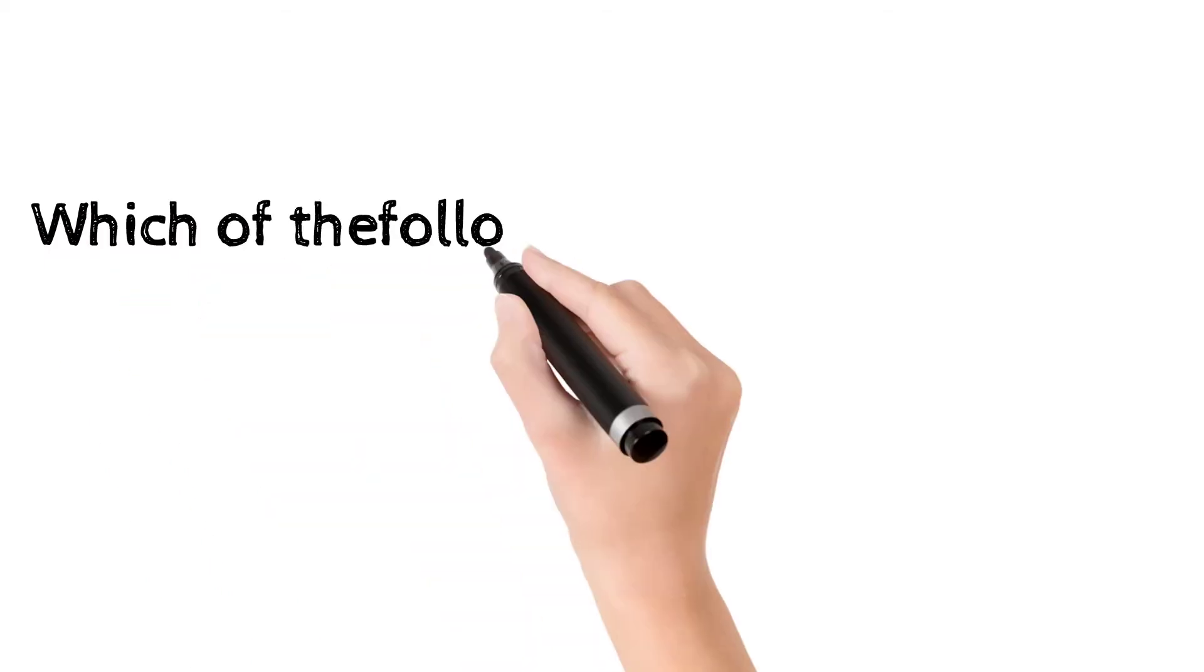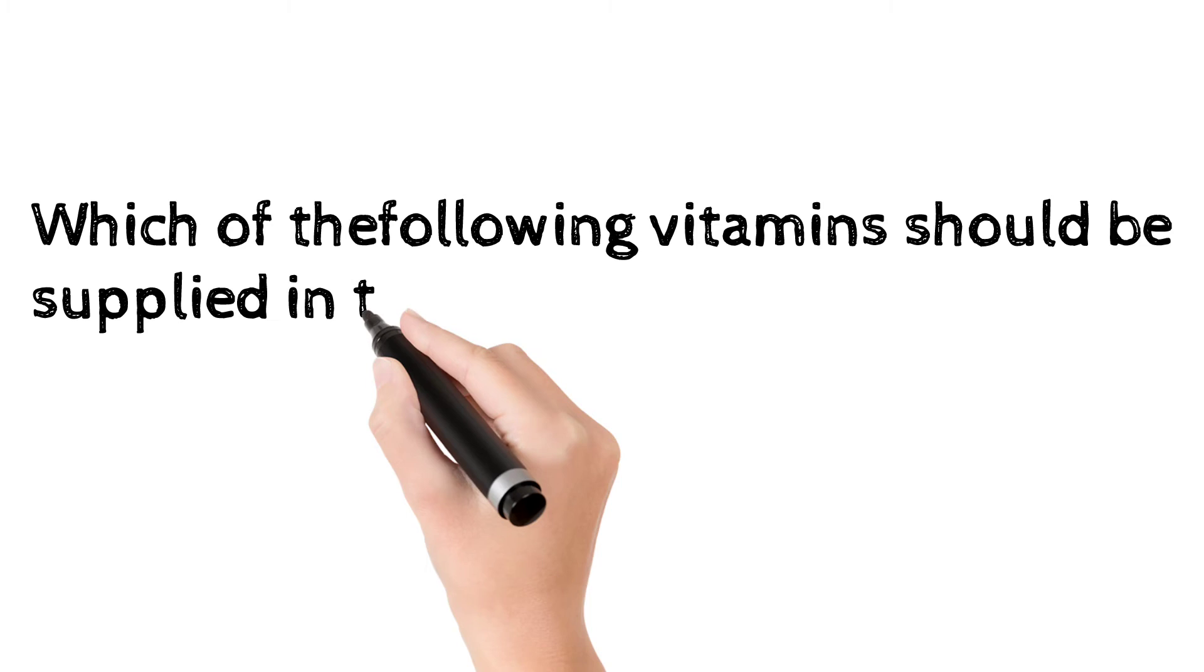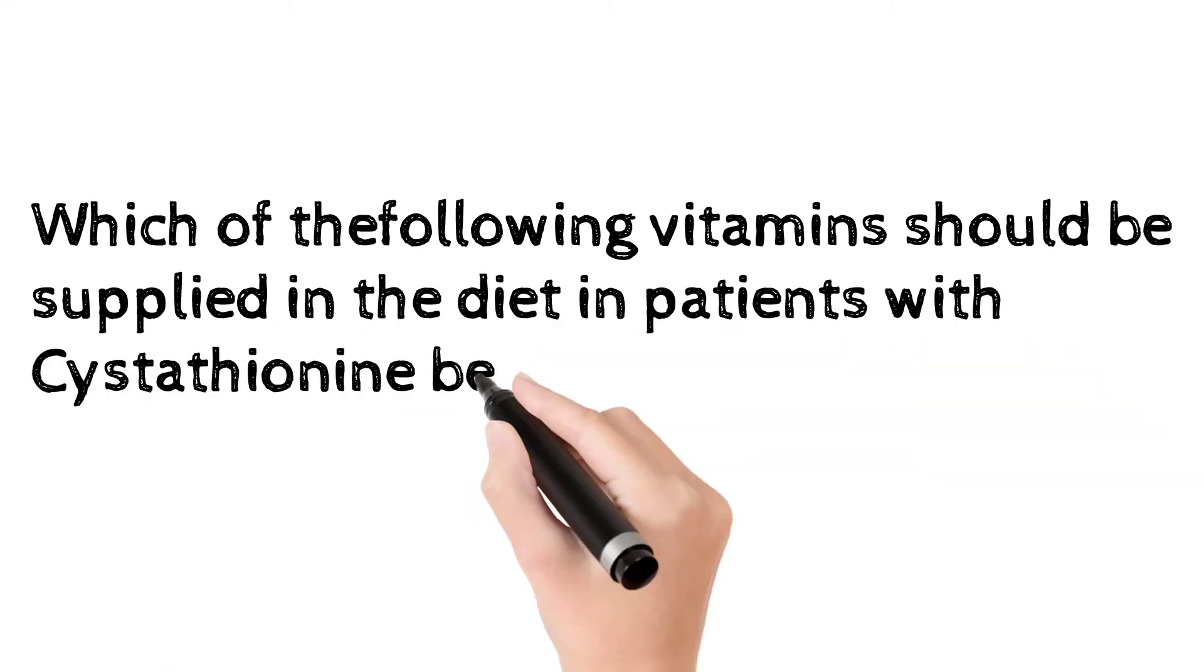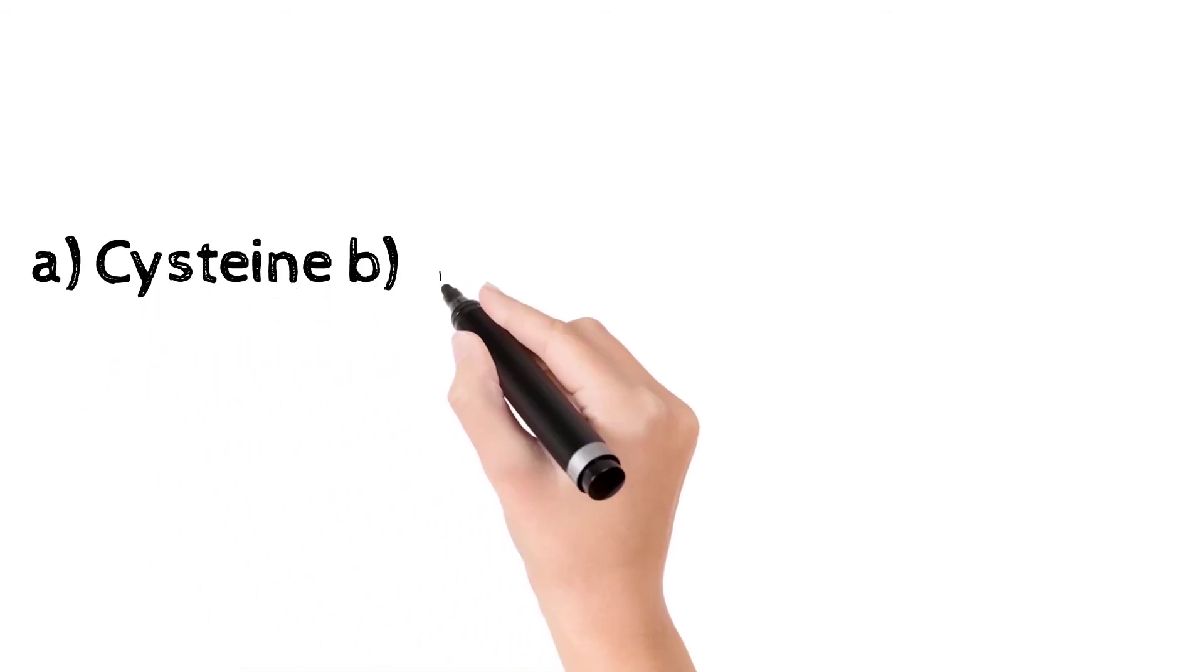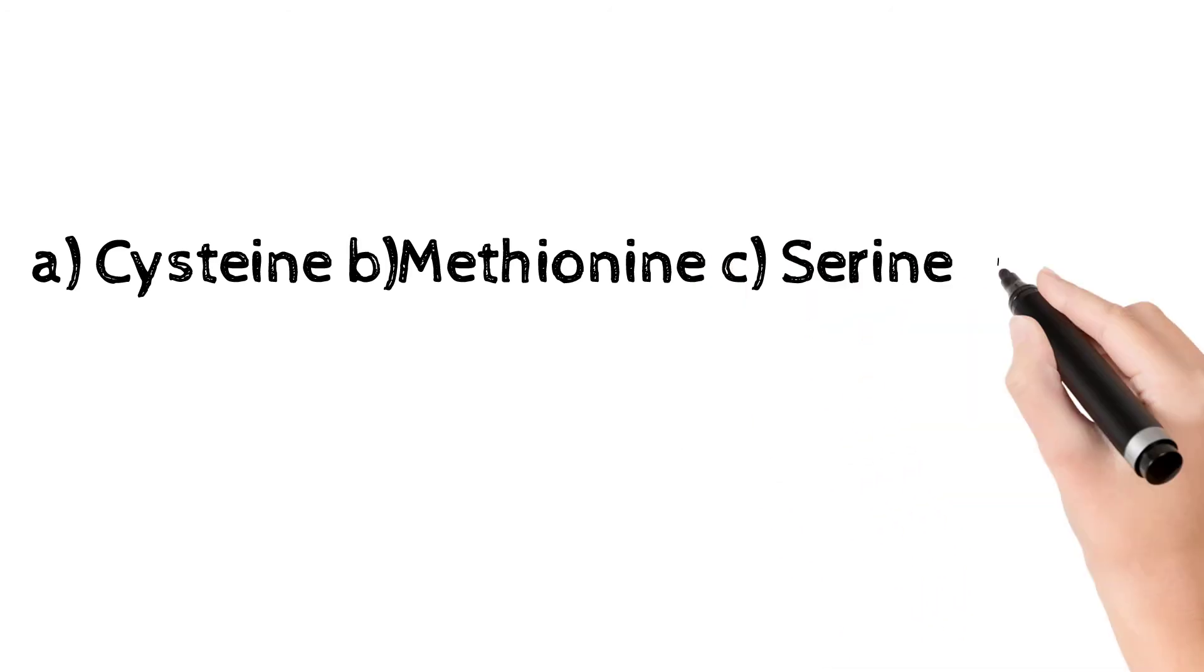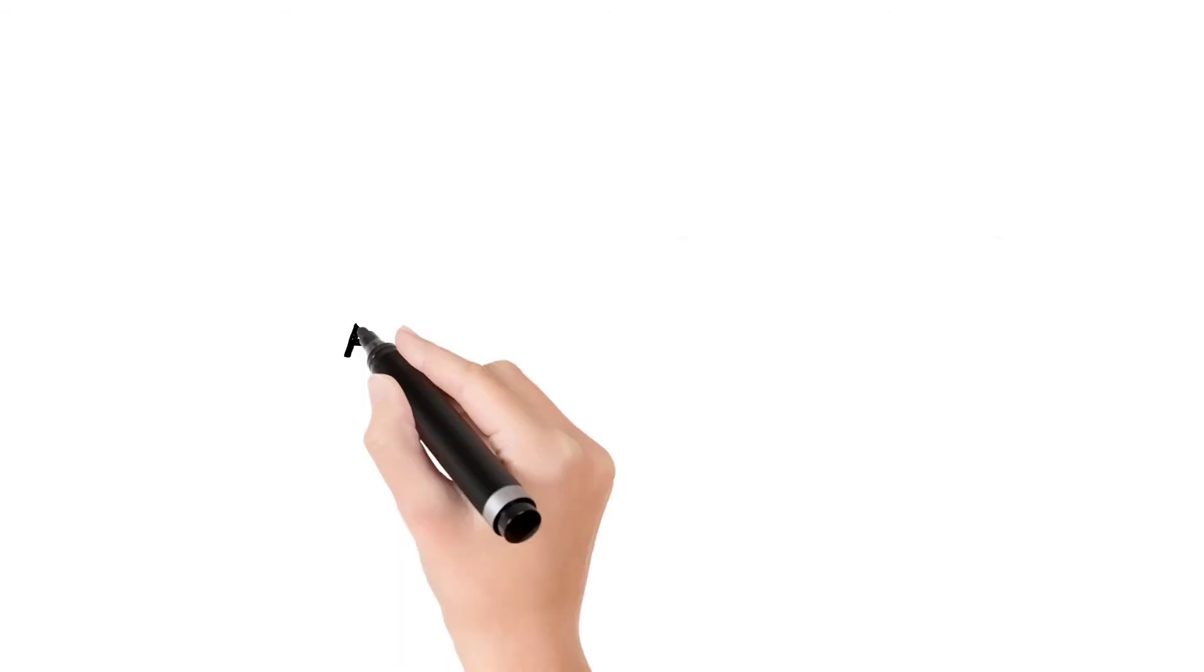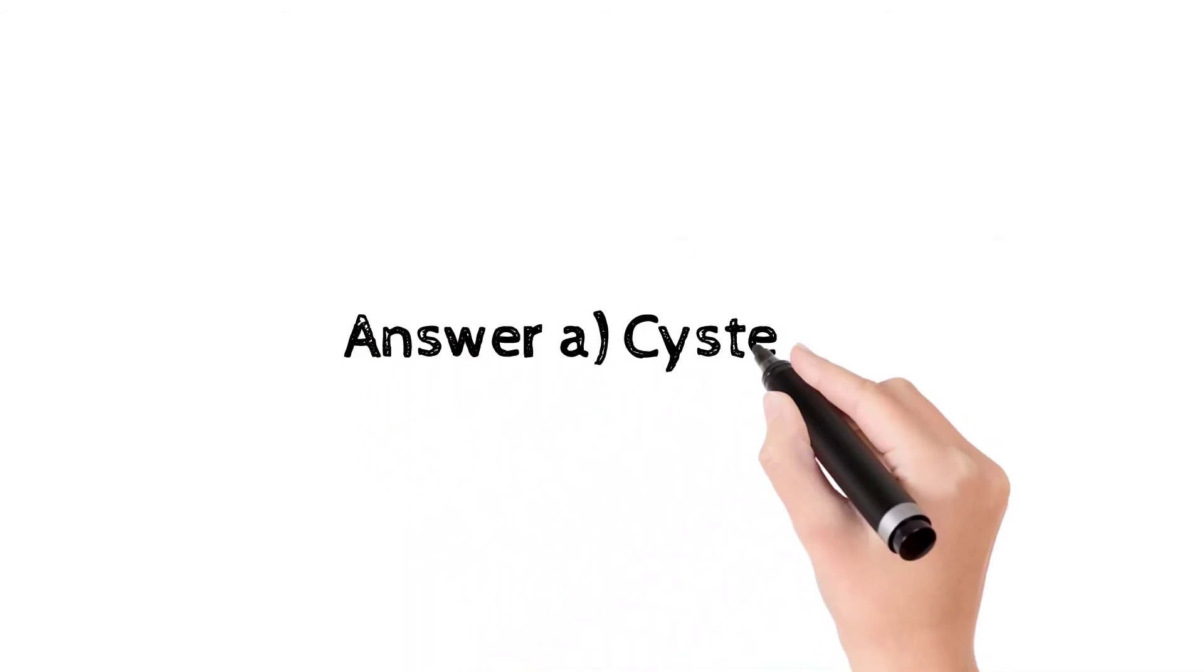Which of the following vitamins should be supplied in the diet in patients with cystathionine beta synthase defect? Options are: a) cysteine, b) methionine, c) serine, d) homocysteine. The answer is a) cysteine.